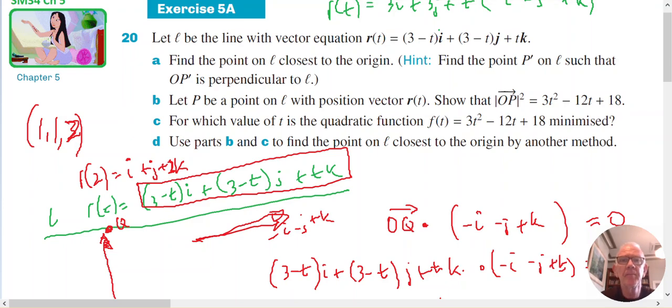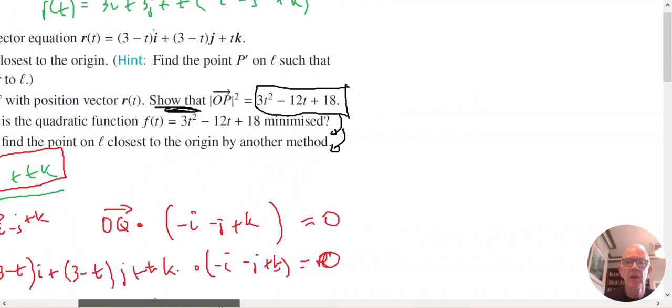Okay, in part B, we're asked to show that this is something. My first thinking process is, if we've been asked to show that this is equal to this, then this is important somewhere later in the question.